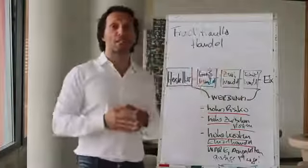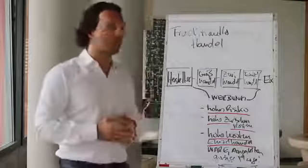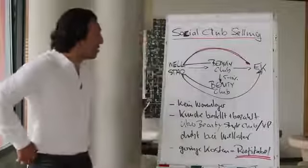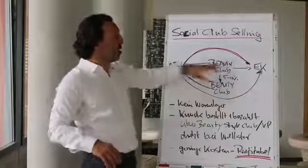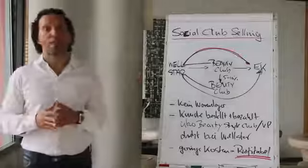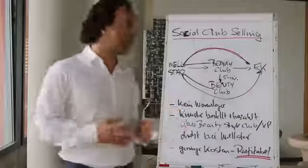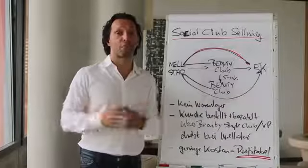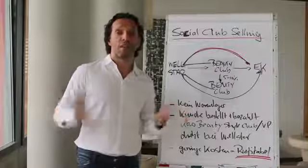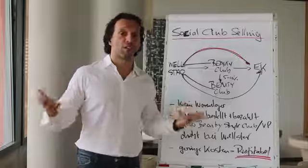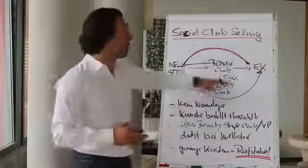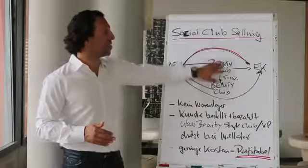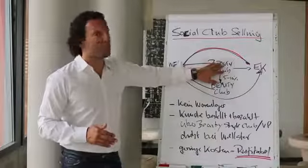Now what we do very simply is social club selling. In social club selling, we have both: we have the internet and we have the clubs. Because of the clubs, we can invite customers to the clubs to experience the product. The internet can't do this. Amazon can invite nobody nowhere and show them how the product works. So we invite customers for a free time trial in our beauty style clubs, and in the beauty style clubs, the customer can test the product.